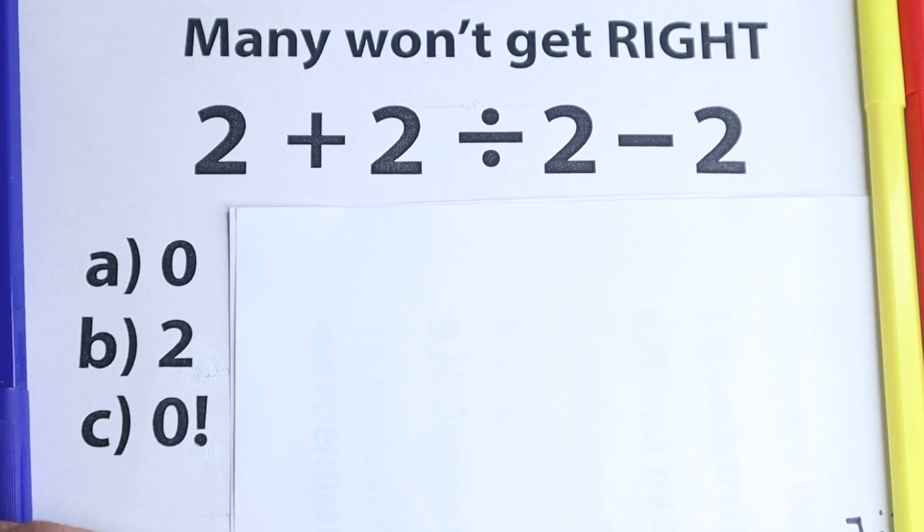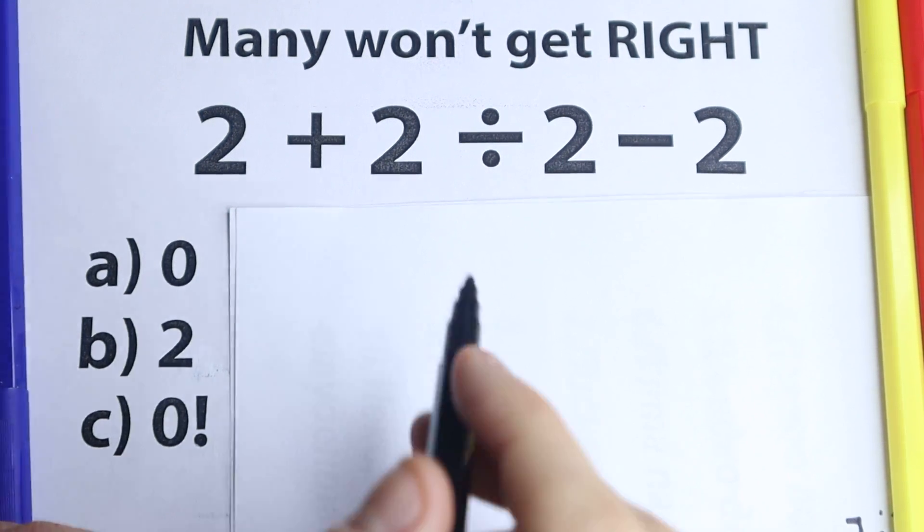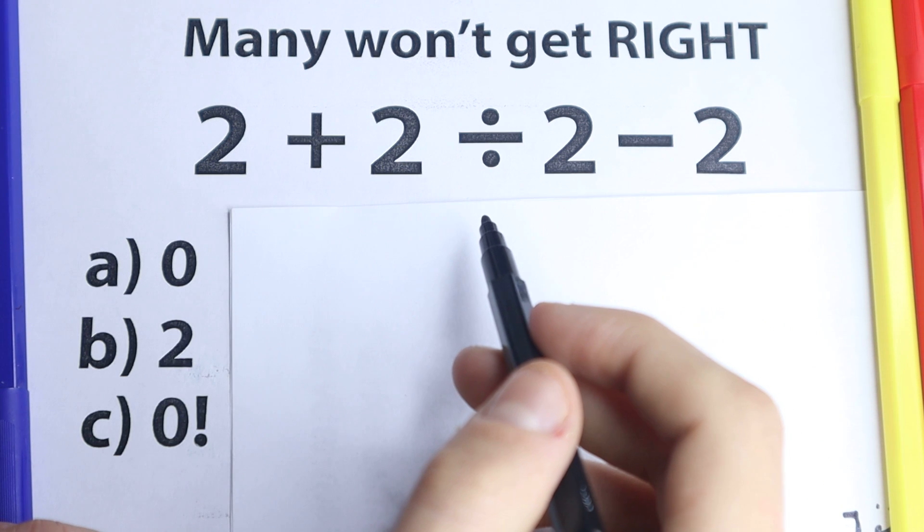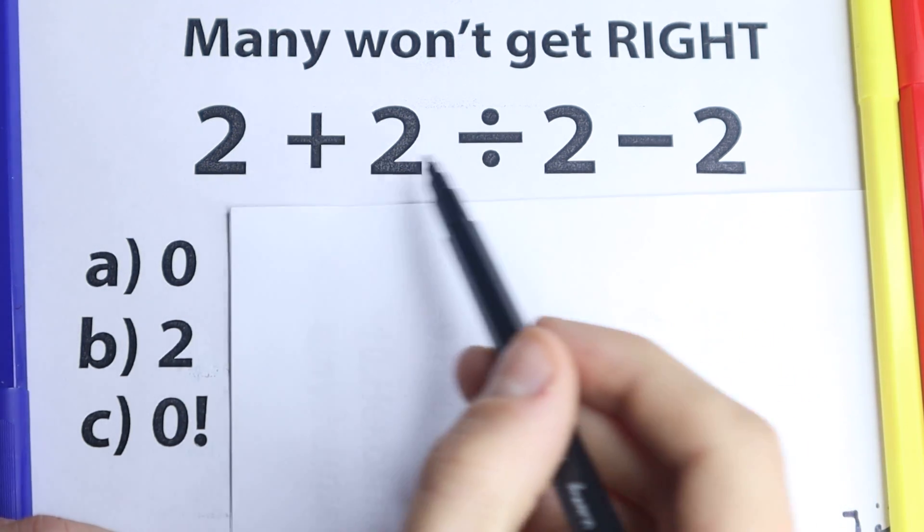Hello everyone! Happy to see you here, and here is our question. Today we have 2 plus 2 divided by 2 minus 2. On the first side, this is a very simple question. We have all twos.